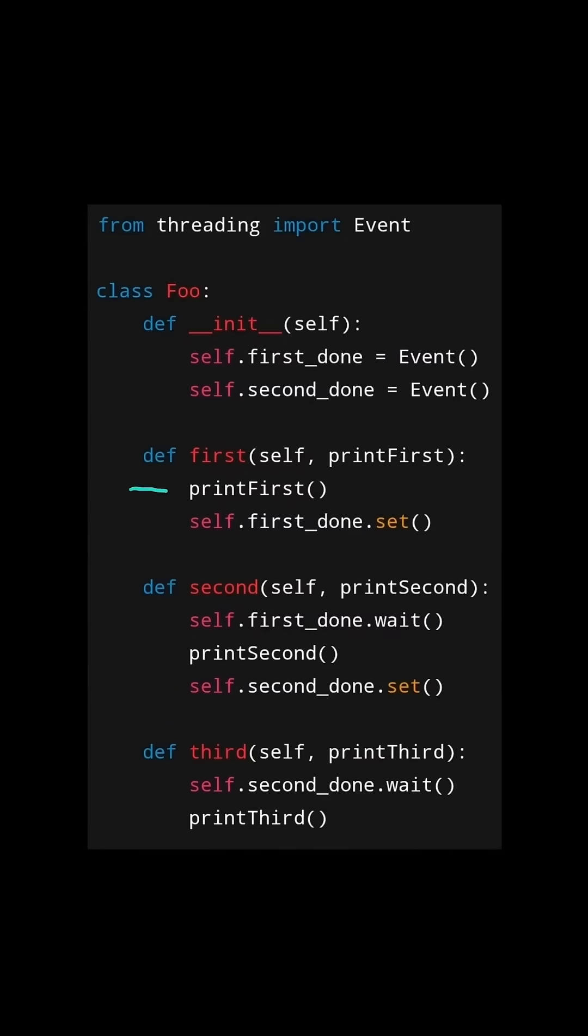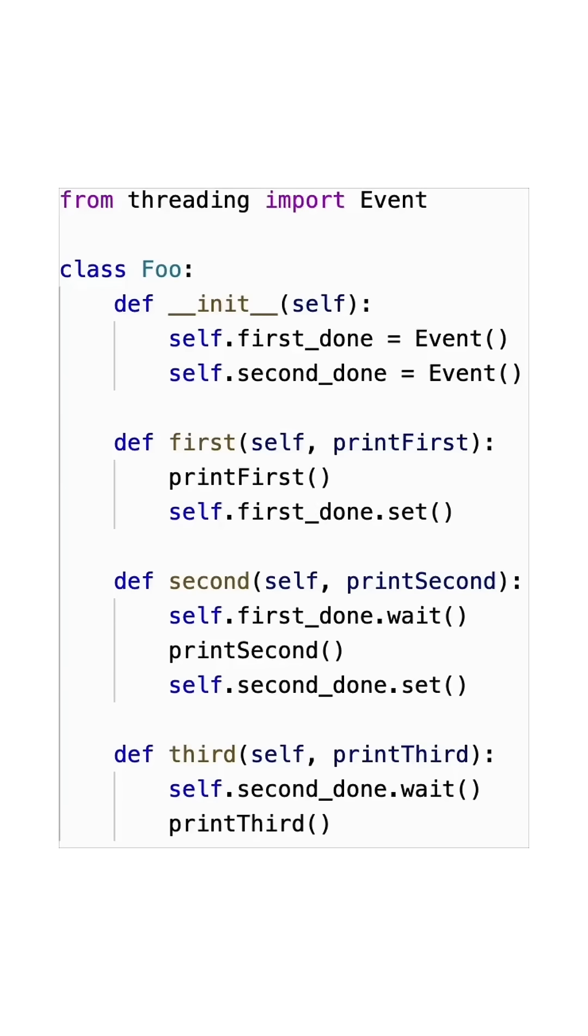This mechanism ensures that first is printed first, second is printed second, and third is printed third. Here's the code to do so.